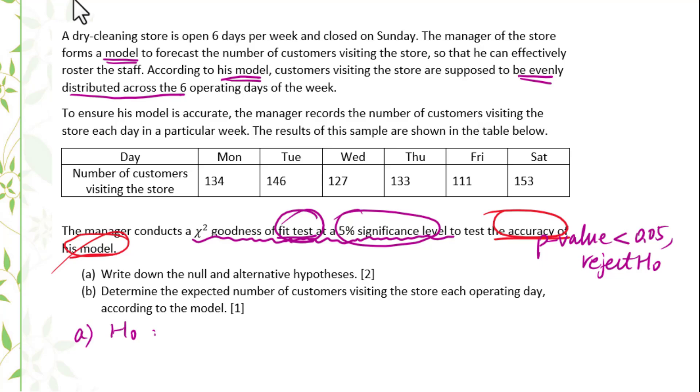So for null hypothesis, his model is accurate. Alternative hypothesis, his model is not accurate.